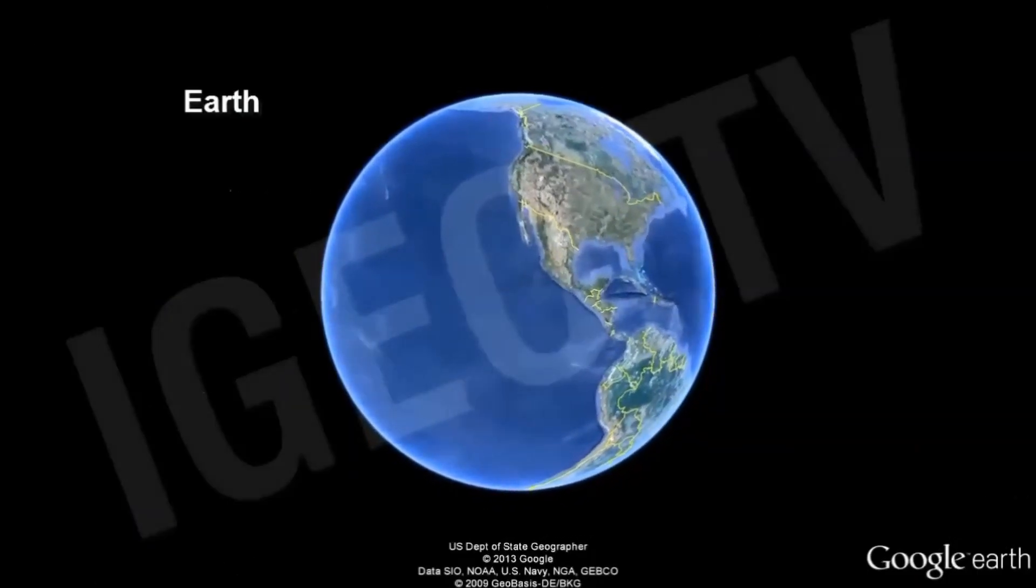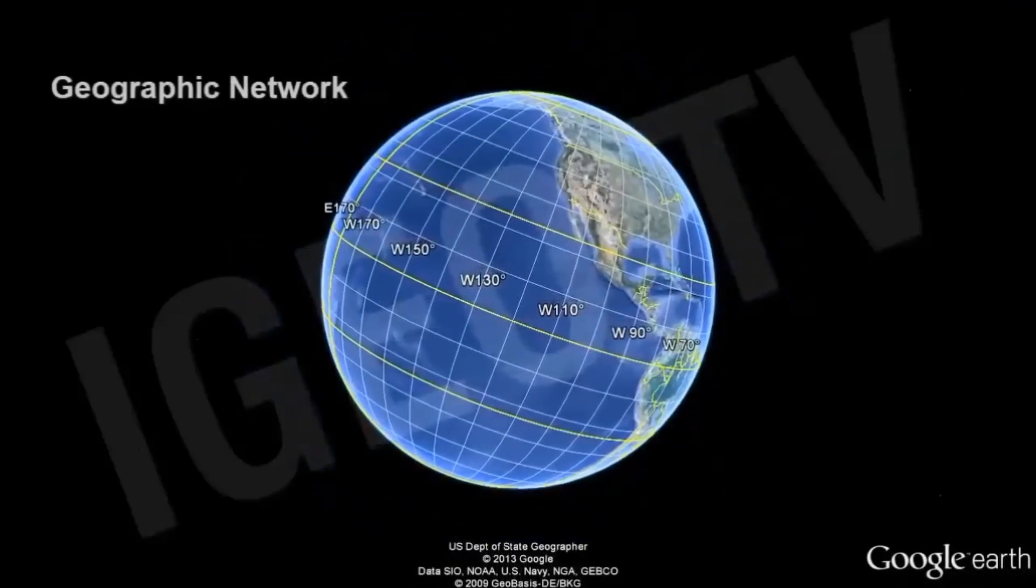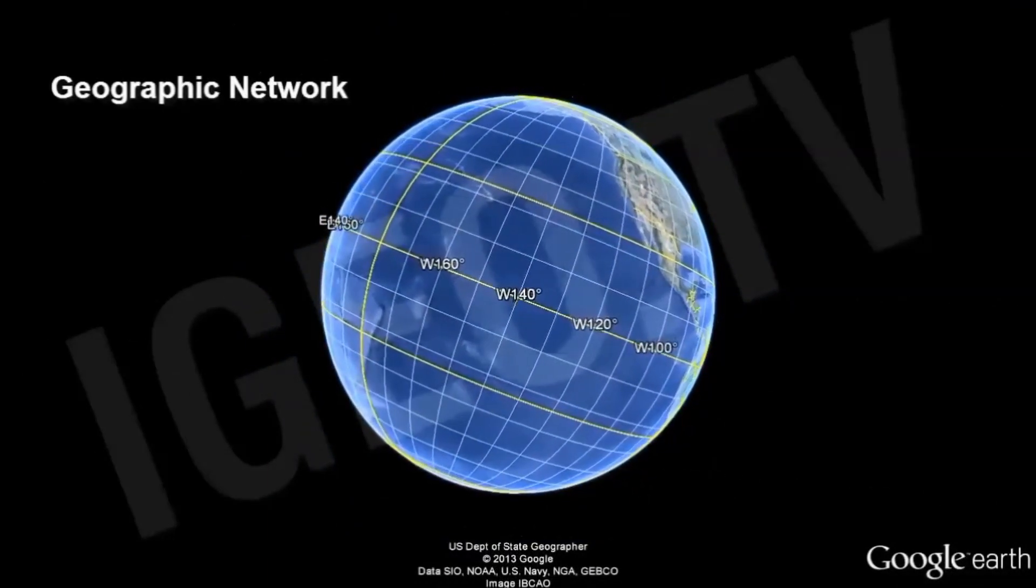We have used horizontal lines and vertical lines to divide the surface of Earth. The horizontal lines, we call them latitudes, are directed from east to west. The longitudes, or the vertical lines, run from north to south.